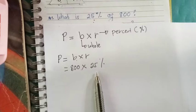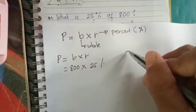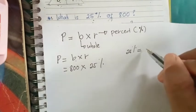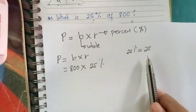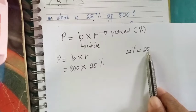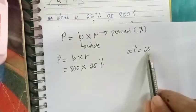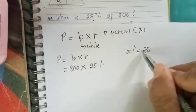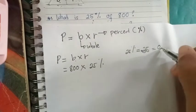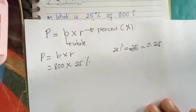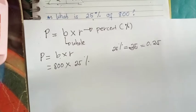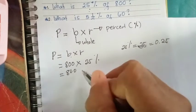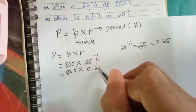We will just multiply 800 times 25%. Can we do it directly? No. We will change 25% into decimal. To change it into decimal, we will drop the percent symbol. Then, move the decimal point two places to the left. Since it's a whole number, the decimal is here. Move two places to the left. The answer is point twenty-five or twenty-five hundredths.